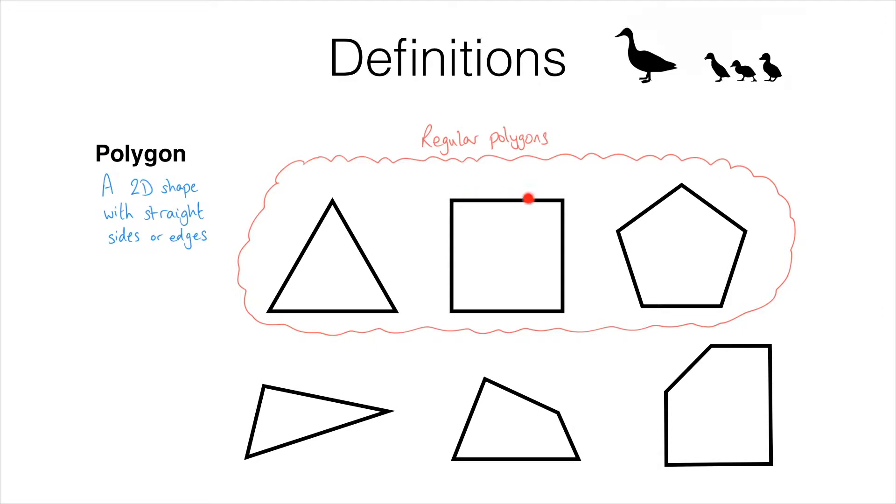Next we've got this four-sided shape. This is also regular because it has four sides that are the same length and all of the interior angles are the same size. You've also probably come across the name of this before. It's a square.